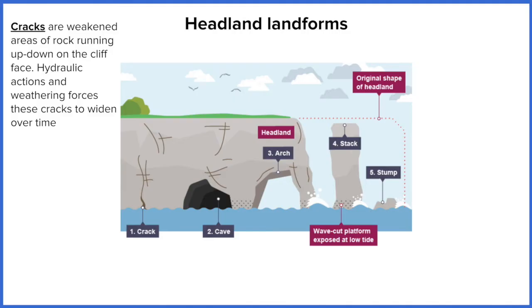Bedding planes are the lateral gaps between different layers of sedimentary rock. So sedimentary rock is a build-up of different types of material, usually plants and animal life, that's been compressed by the sea and structured into different layers. So it's the gaps between these different layers, while joints are the vertical gaps between these different layers.